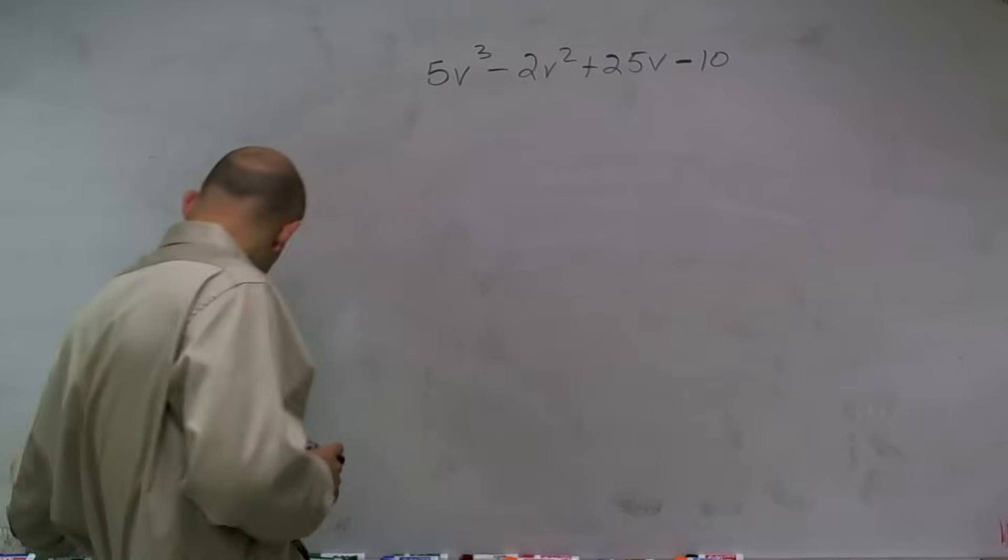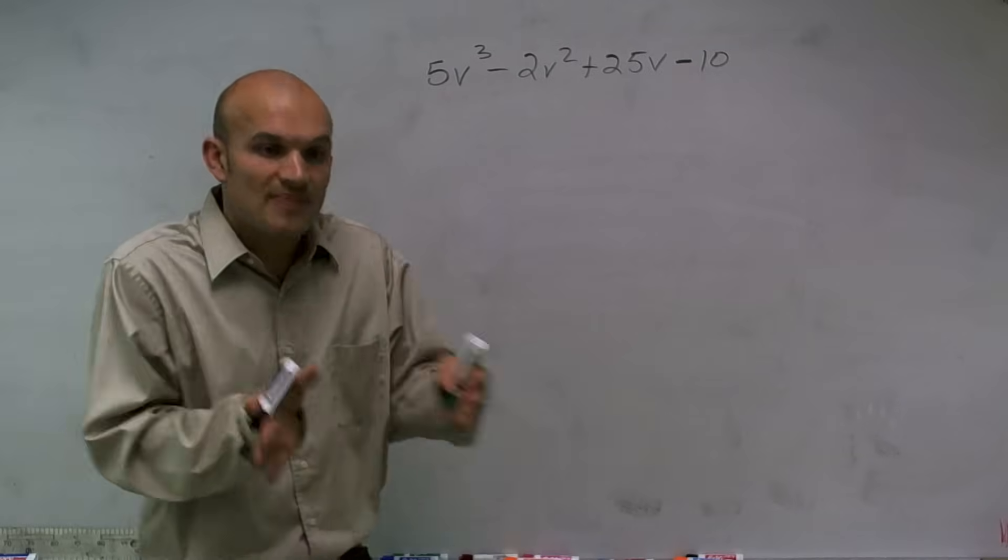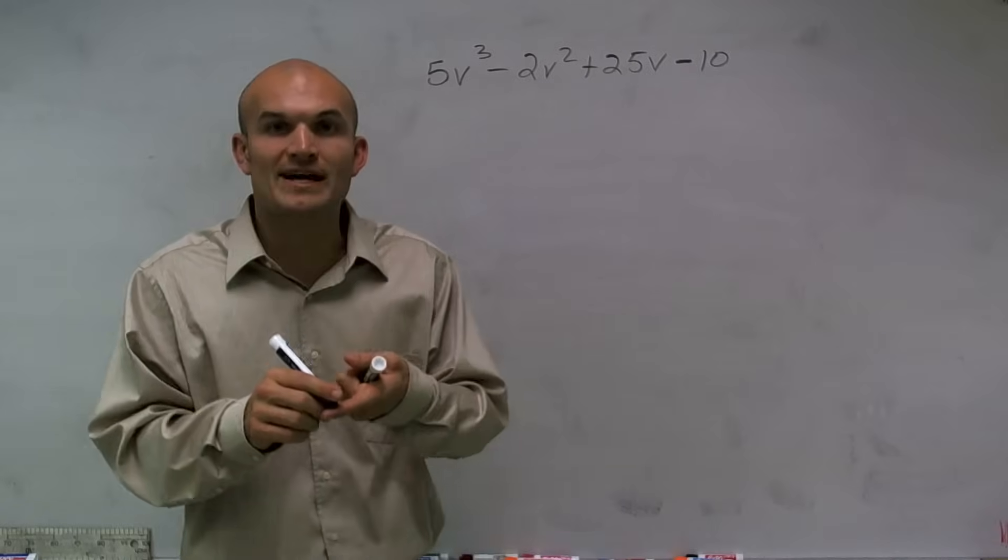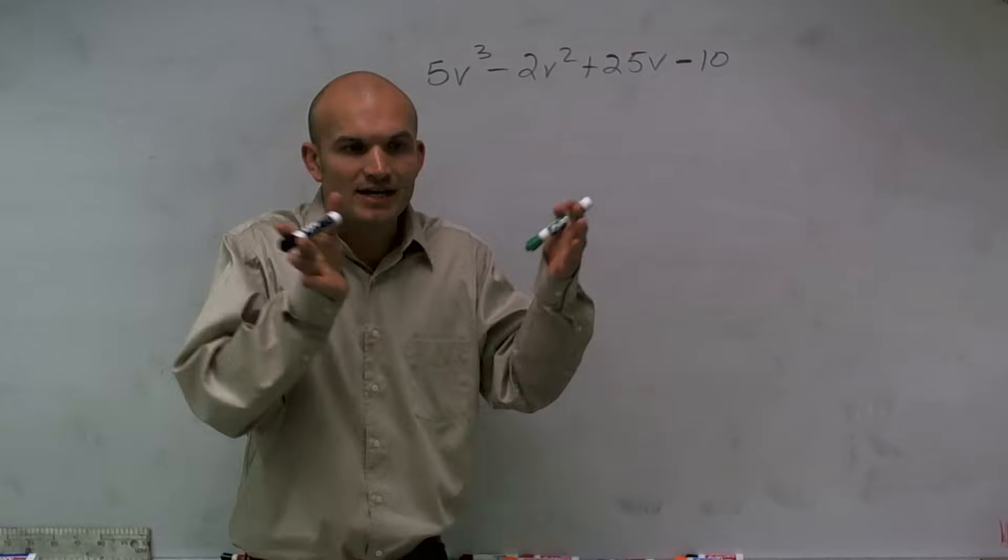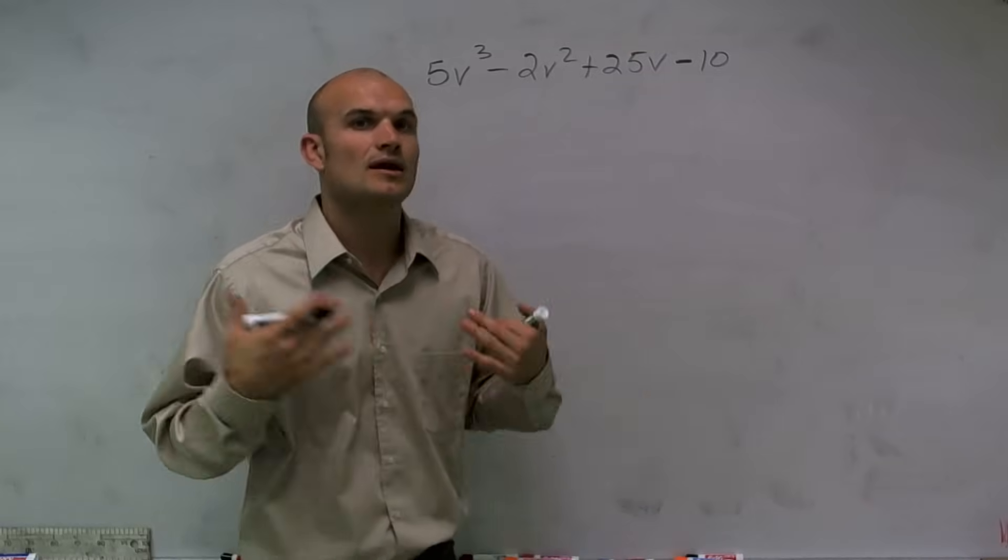So what I'm going to do is I'm going to group them and then I'm going to factor each individual. Because like I said, I can factor when I have two terms, I can factor when I have three terms. But when I have four terms, it's getting kind of big. So what I can do is if I can group them into two different terms and then factor those separately, I'll work it out.